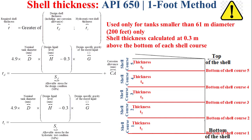The hydrostatic test shell thickness tt is determined as a function of the nominal tank diameter D, the design liquid level h, the design specific gravity of the stored liquid g, and the allowable stress for the hydrostatic test condition denoted by st.